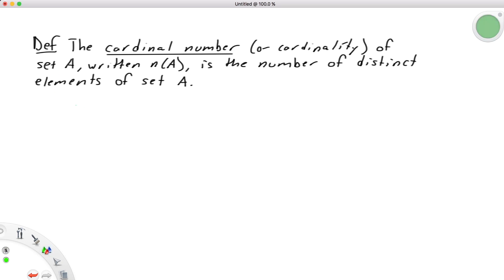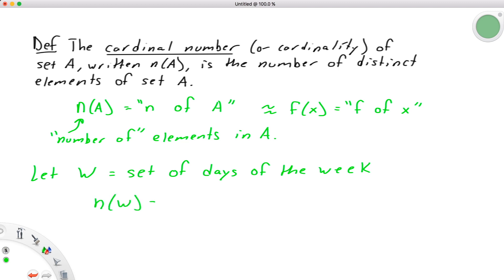Let's note that when we write n(A), it's read n of A. This is similar to f(x), if you're familiar with function notation. You can loosely think of this like n for number and read the number of elements of set A. And for something like W equal to the set of days of the week, this works well as we would write n(W) equal to 7, since there are 7 elements in that set, 7 days in the week.